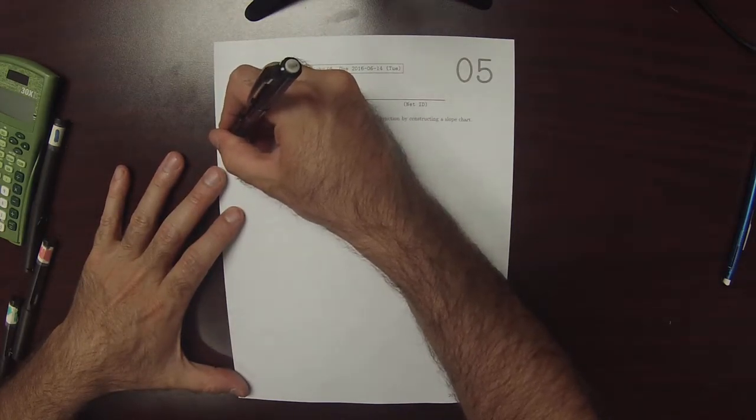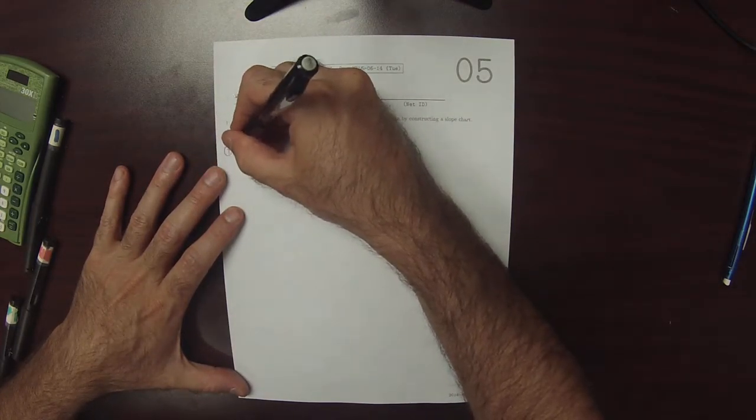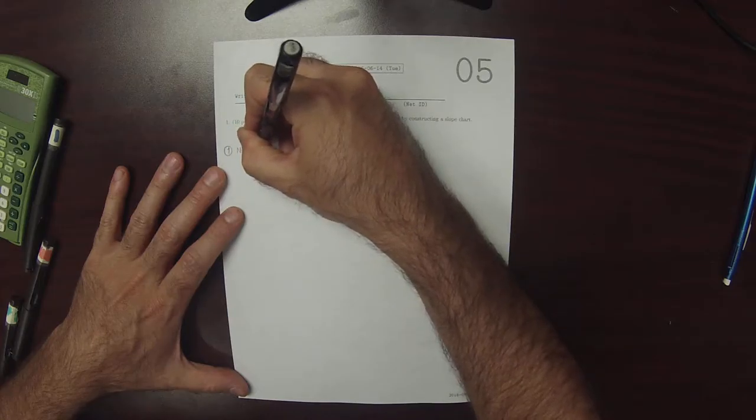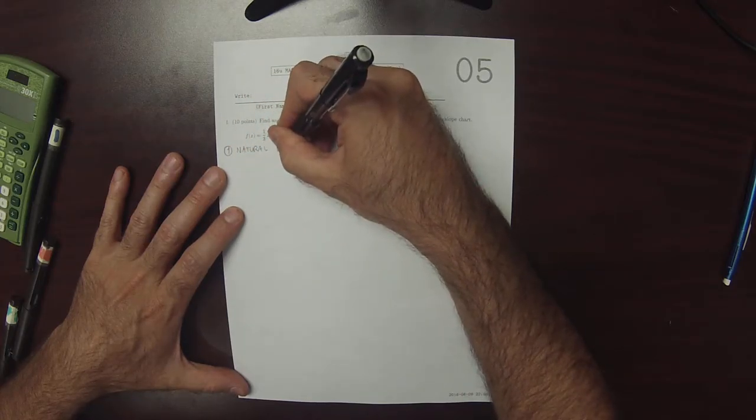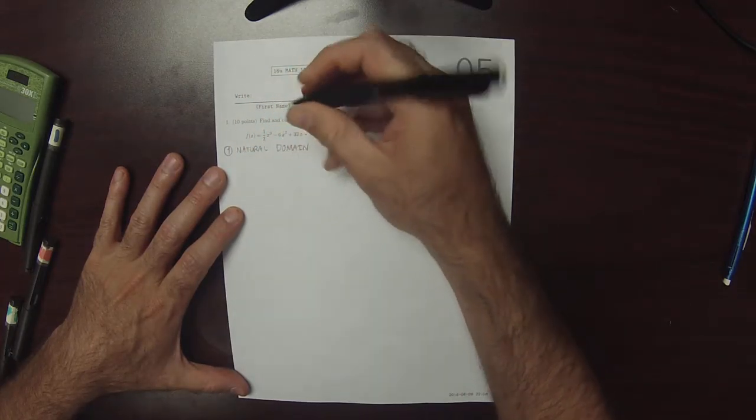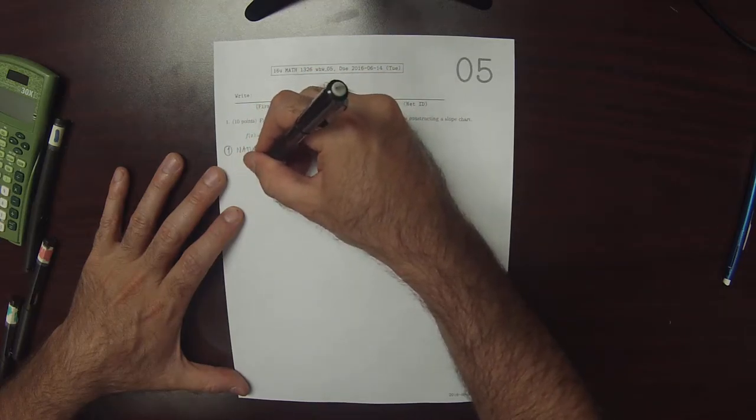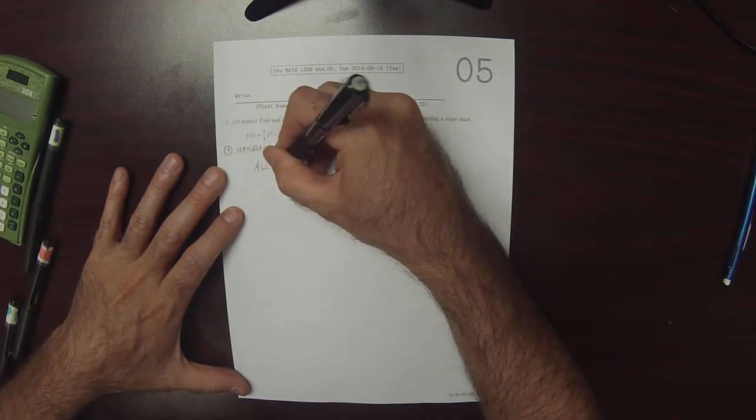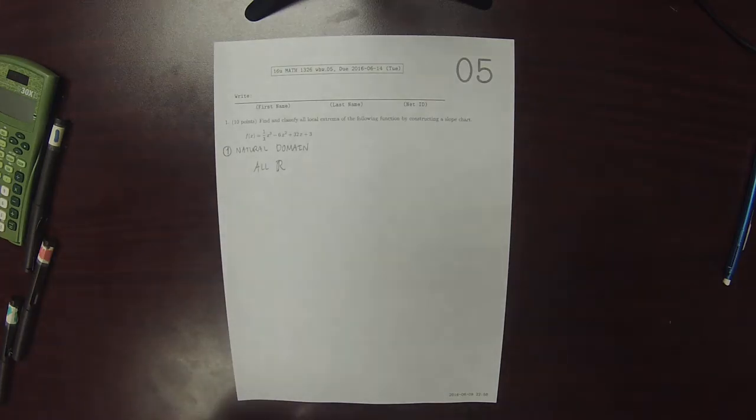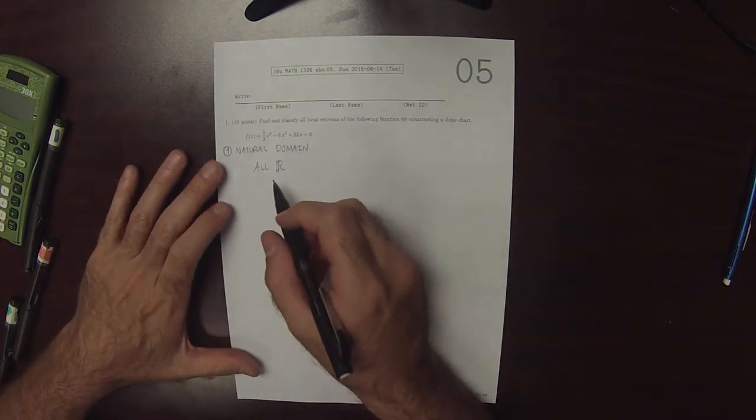So the first step is to consider the natural domain. The natural domain is all reals because the function given is a polynomial, and that's the natural domain of polynomials.